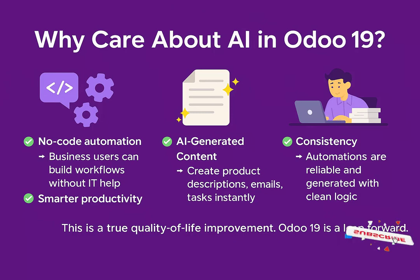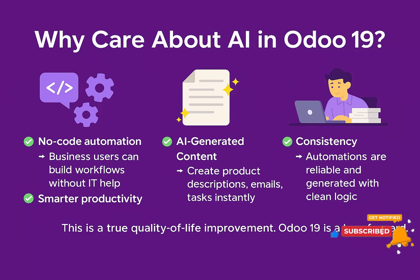Future proofing — Odoo is moving towards an ERP that adapts to your business instead of you adapting to it. And this is the kind of quality of life improvement that makes Odoo 19 a leap forward, not just another version.